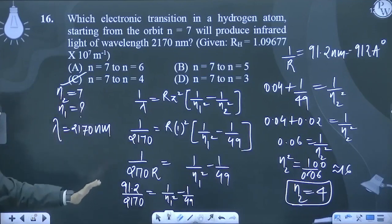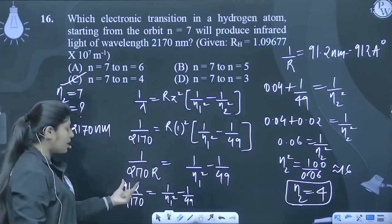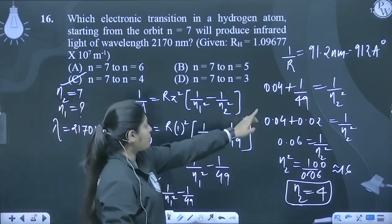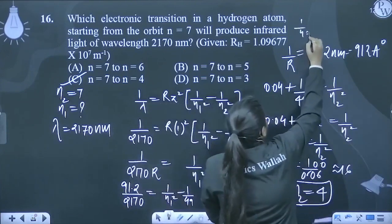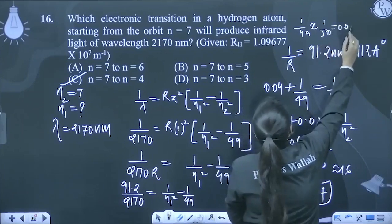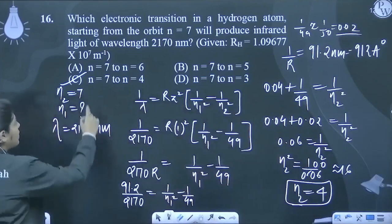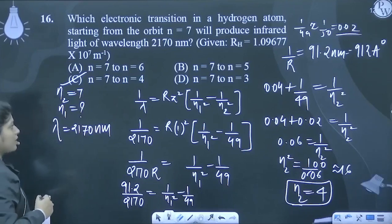Thoda sa calculation is me jayega. Hamne kya kiya hai? Wavelength rakhha. 1 by R ki value rakhye 91.2. Jib isko solve kiya, to 0.04 aaya. 1 upon 49 ko maine approximately kya lekh liya? 1 upon 50. Or 1 upon 50 kitna hota hai? 0.02. Thik ya? And further solve karne ke baad, myra n2 kitna aaja hai? n1 kitna aaja hai? 4. Thik ya?